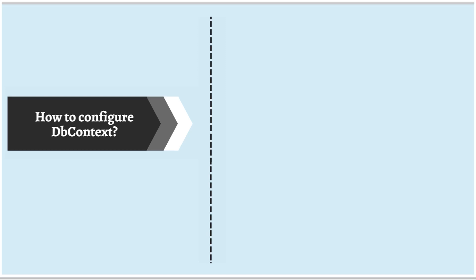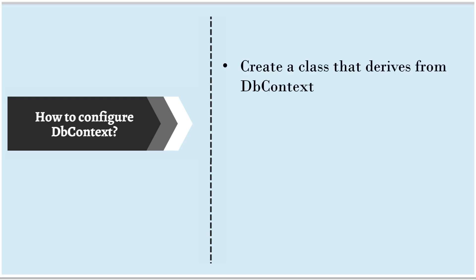Next, how do we configure DbContext? The first step is we create a class that derives from DbContext. We have installed all the necessary NuGet packages for Entity Framework Core, so the DbContext class is ready to use. But we don't use this class directly — we create a separate class that derives from DbContext so that we can avail all the functionalities available inside DbContext.